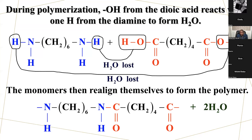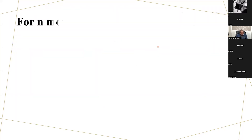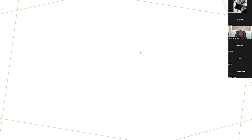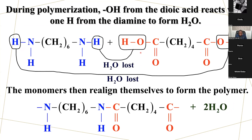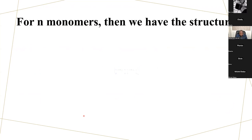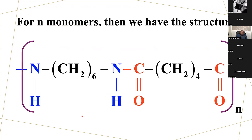Then you get your nylon 6-6. It's not magic — it is simply chemistry. The combining elements have free ends and they can continue combining. Then you are going to have your compound — and that is the formula of nylon 6-6.